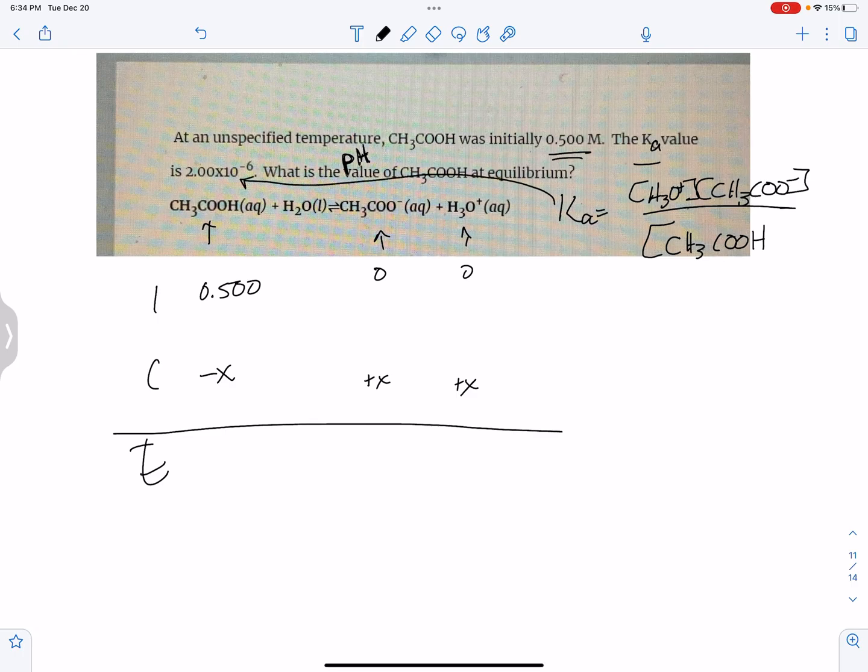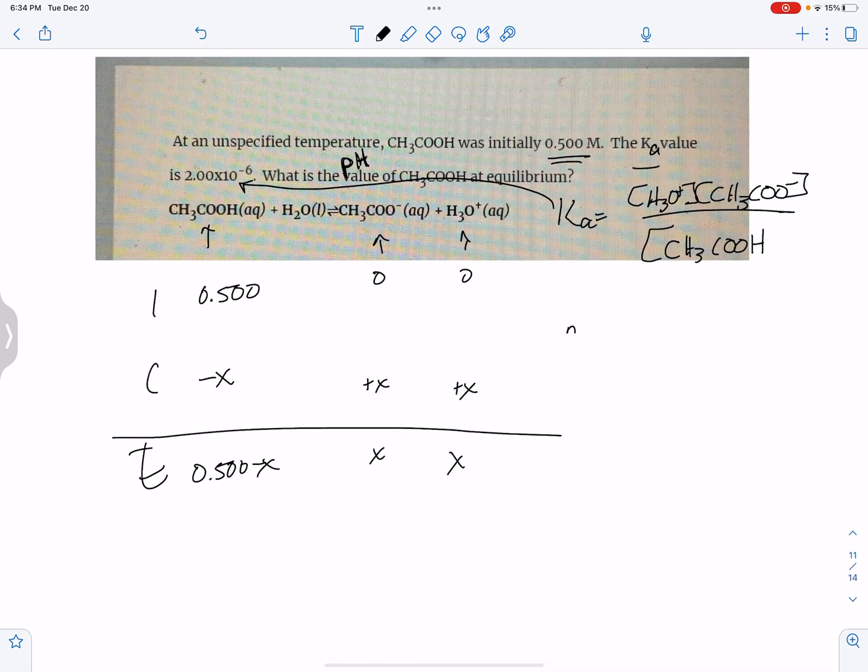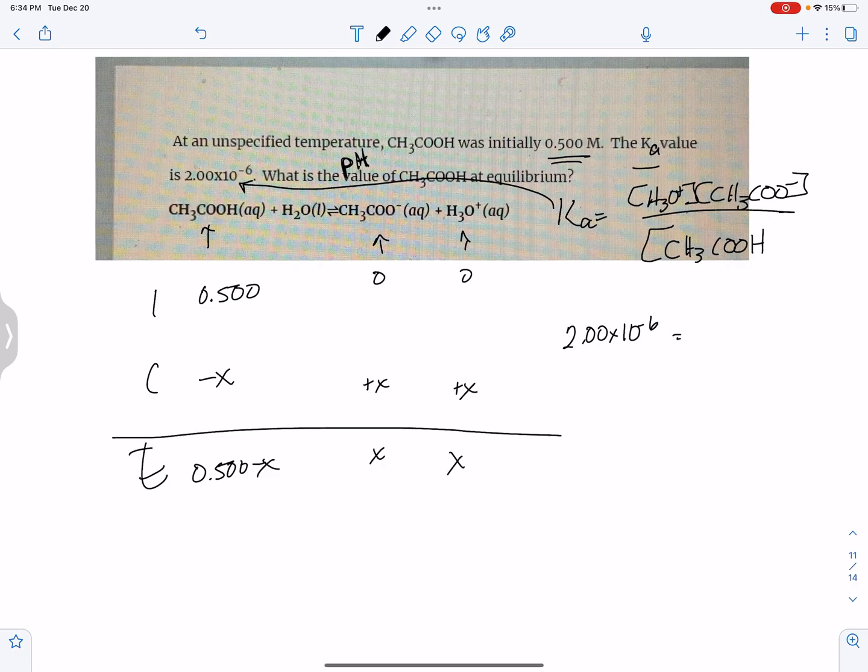All right, I'm going back to my ICE chart. So I have 0.500 minus X, X, and X. When I plug that in, I'm going to fill in my Ka, so I know this number equals X times X, so that's X squared, over 0.500 minus X.